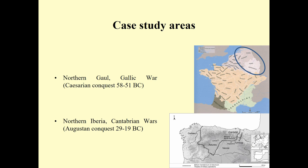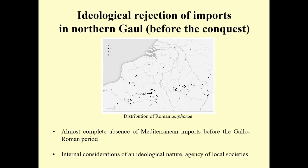My case studies — and because time is short I will go very briefly through them — are Northern Gaul, particularly during the period of the Caesarian Conquest in the 50s BC, and Northern Iberia during the Augustan Conquest between 29 and 19 BC. Starting with the pre-conquest period in Northern Gaul, we see a very interesting phenomenon of what I would call ideological rejection of imports or certain external technologies.